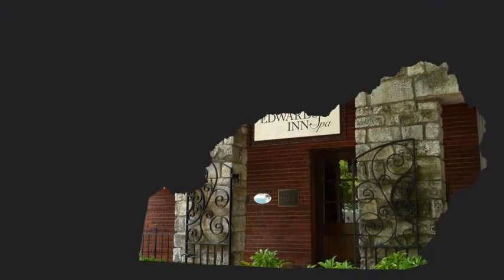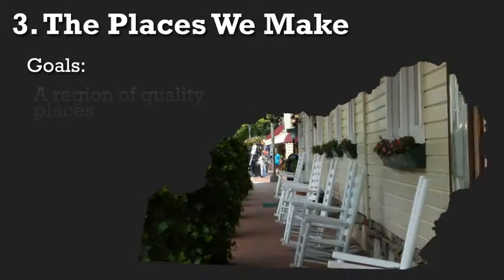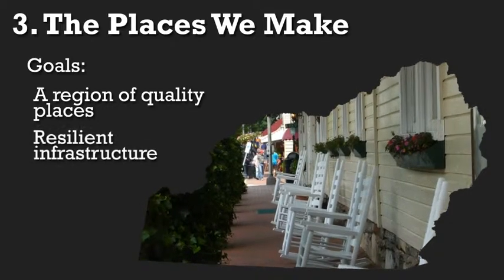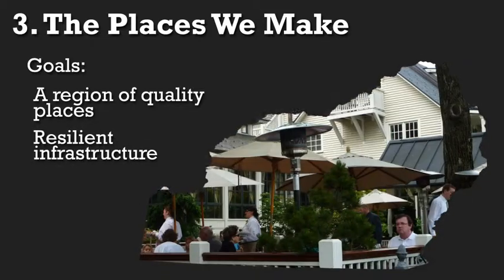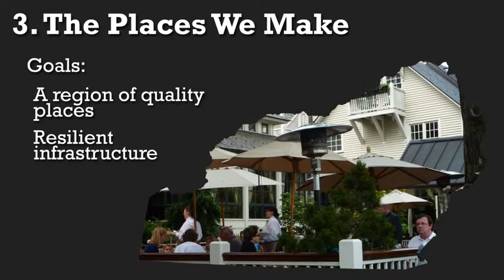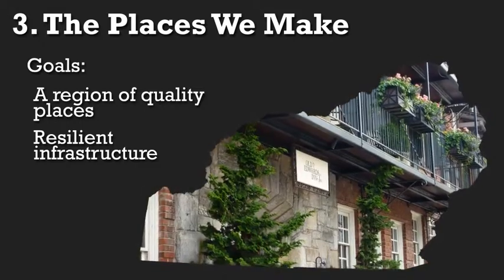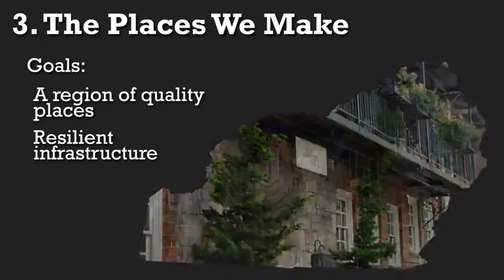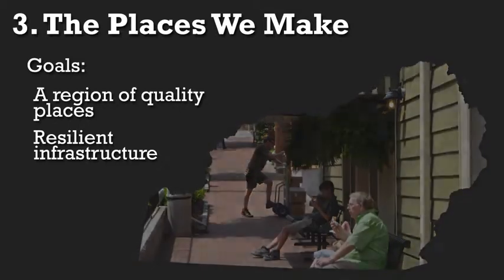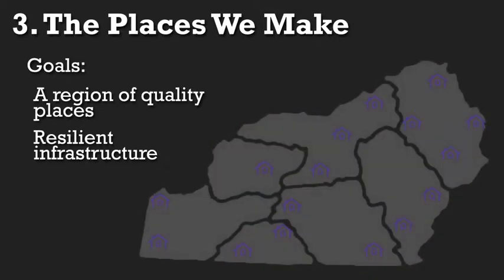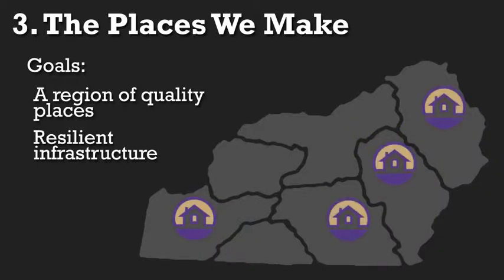For pillar number three, the places we make: conversion of land from rural to urban should be orderly and take into account the region's unique character. With growth expected to occur, how might the mountain character of each town be preserved while also accommodating changes that make the best use of available resources? For example, the community indicated that increasing housing density around village centers might bring residents and visitors closer to shops, restaurants, and businesses, making local economic opportunities more available while preserving natural landscapes, as people are traveling less to reach homes, jobs, and recreation.